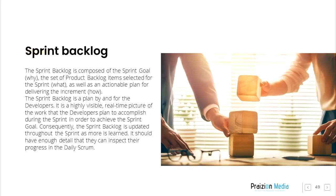Sprint Backlog. The Sprint Backlog is composed of the Sprint Goal (why), the set of product backlog items selected for the Sprint (what), as well as an actionable plan for delivering the increment (how). The Sprint Backlog is a plan by and for the developers. It is a highly visible, real-time picture of the work that the developers plan to accomplish during the Sprint in order to achieve the Sprint Goal. Consequently, the Sprint Backlog is updated throughout the Sprint as more is learned. It should have enough detail that they can inspect the progress in the Daily Scrum.